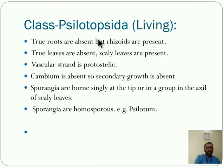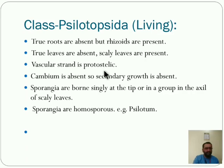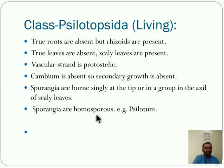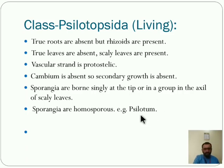The next class is Psilotopsida. It is the living form — that is Psilotum. Only one living plant, Psilotum, is present in this group. First, true roots are absent here also, but rhizoids are present. True leaves are also absent; scaly leaves are present. Vascular strand is protostelic — primitive vascular bundle is present. Cambium is absent, so secondary growth is absent. Sporangia are borne singly at the tip or in a group in the axil of the scaly leaves, and sporangia are homosporous. The example is Psilotum. This is the second class.